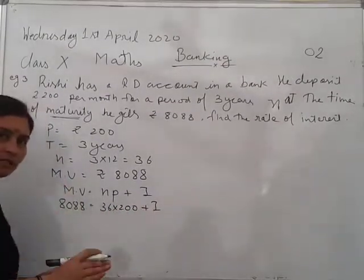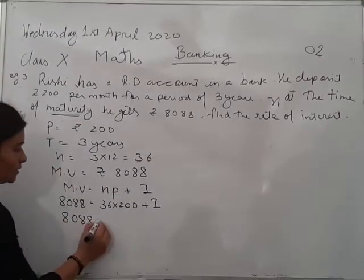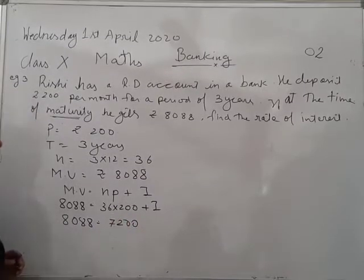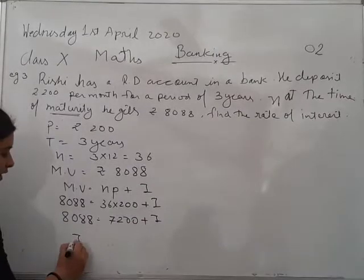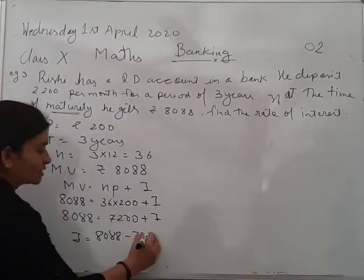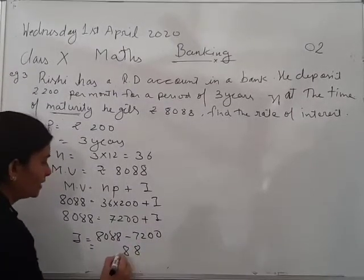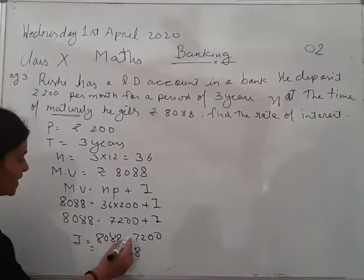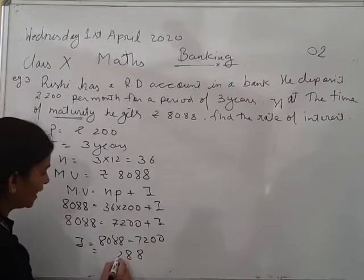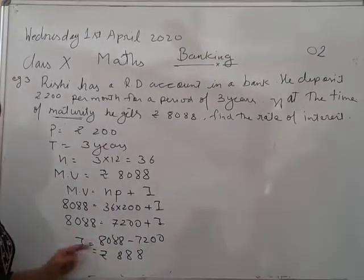First we will take out the interest and then we will take out the rate. So it will be 8088 equals to 7200 plus I. So the interest will be 8088 minus 7200. So 888 is the I coming. The interest is 888.